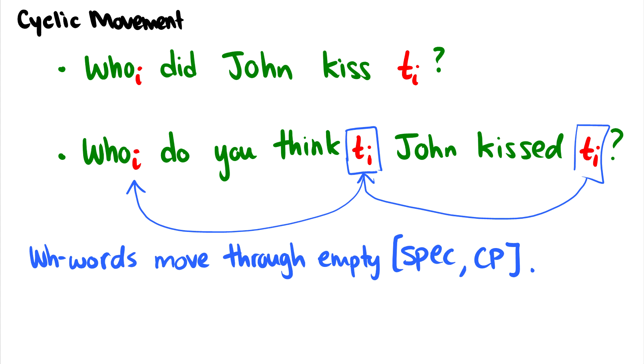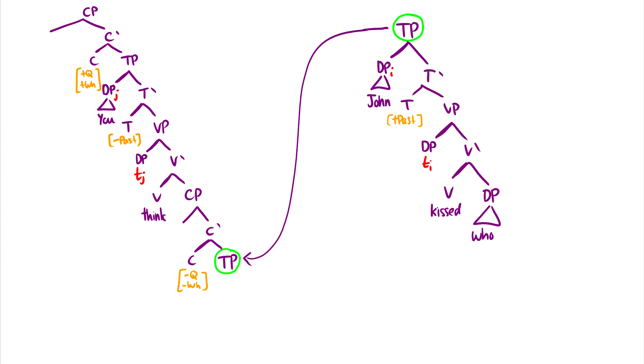And then finally, it moves up. So these WH words are moving through empty spec CP positions. And if a spec CP position is full, then there cannot be movement. Okay, so let's see this in a tree. And in this case, I have to split it up into two trees because it's just too long to do on one page. And I want you to be able to see the whole thing at once.